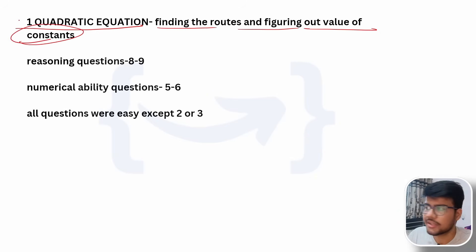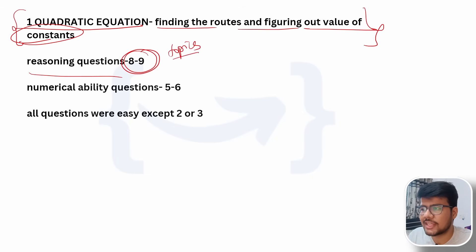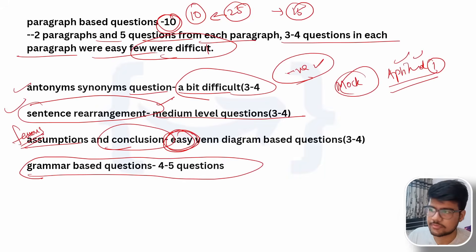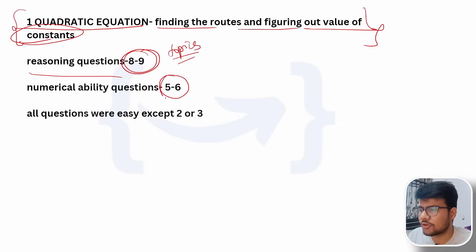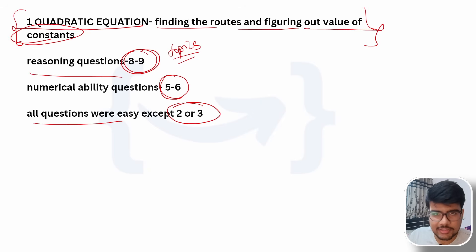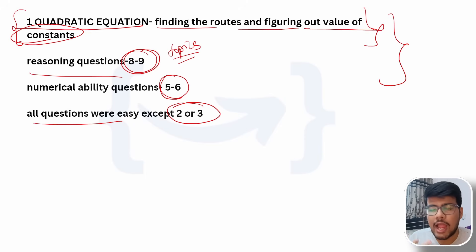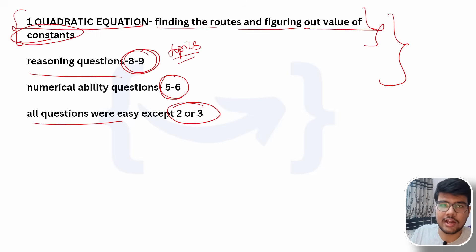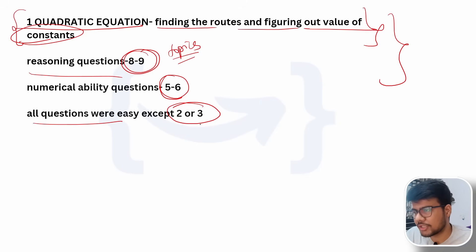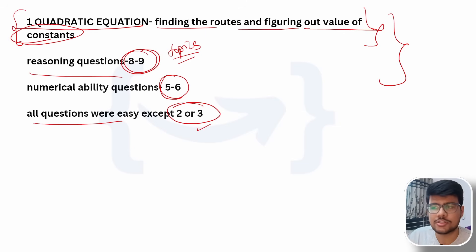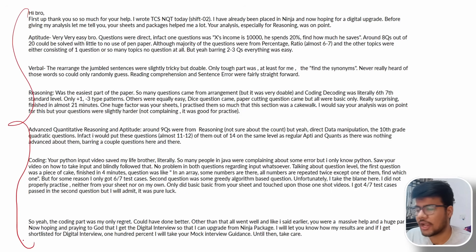In advanced aptitude, reasoning questions were eight to nine, covering the same topics as the basic reasoning section. Numerical ability questions were five to six, almost all easy except two or three. Interestingly, a few candidates mentioned that advanced aptitude felt easier than the basic foundational sections. However, the programming questions in this shift were the real game-changer — two to three were very easy and the rest were hard.